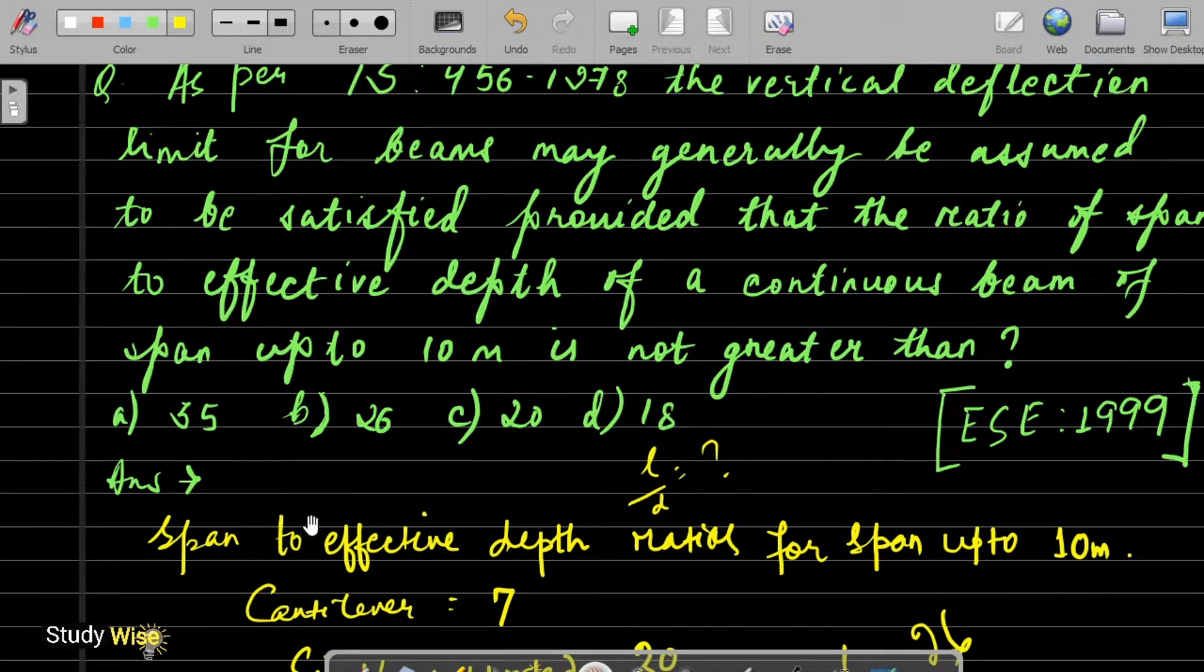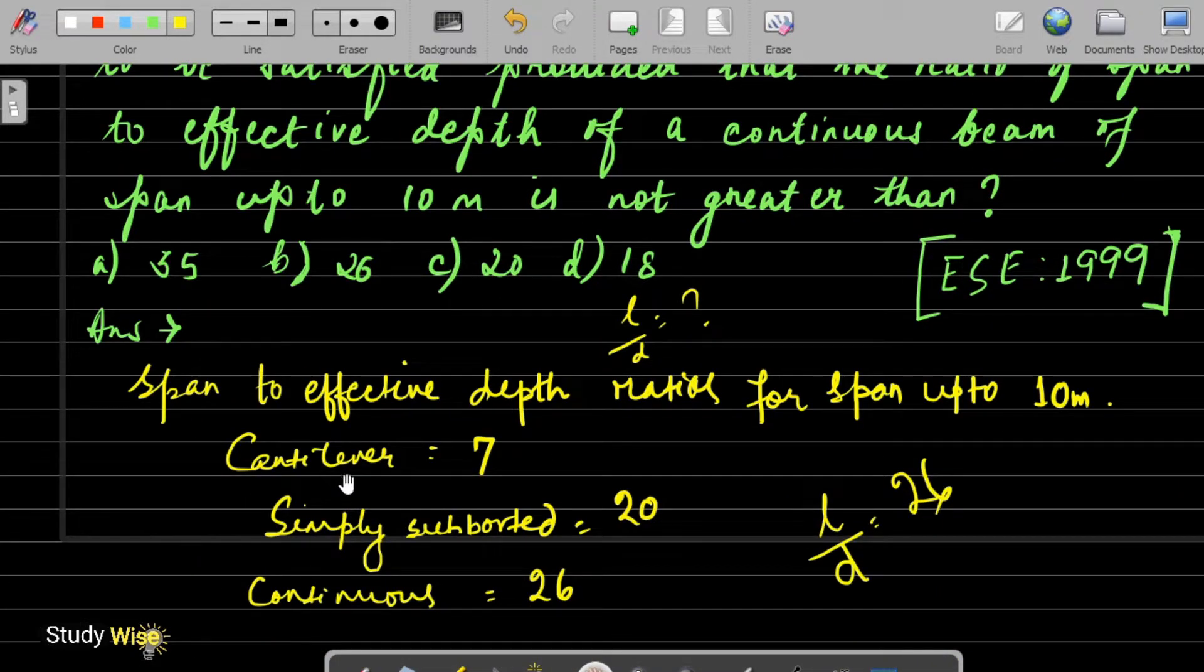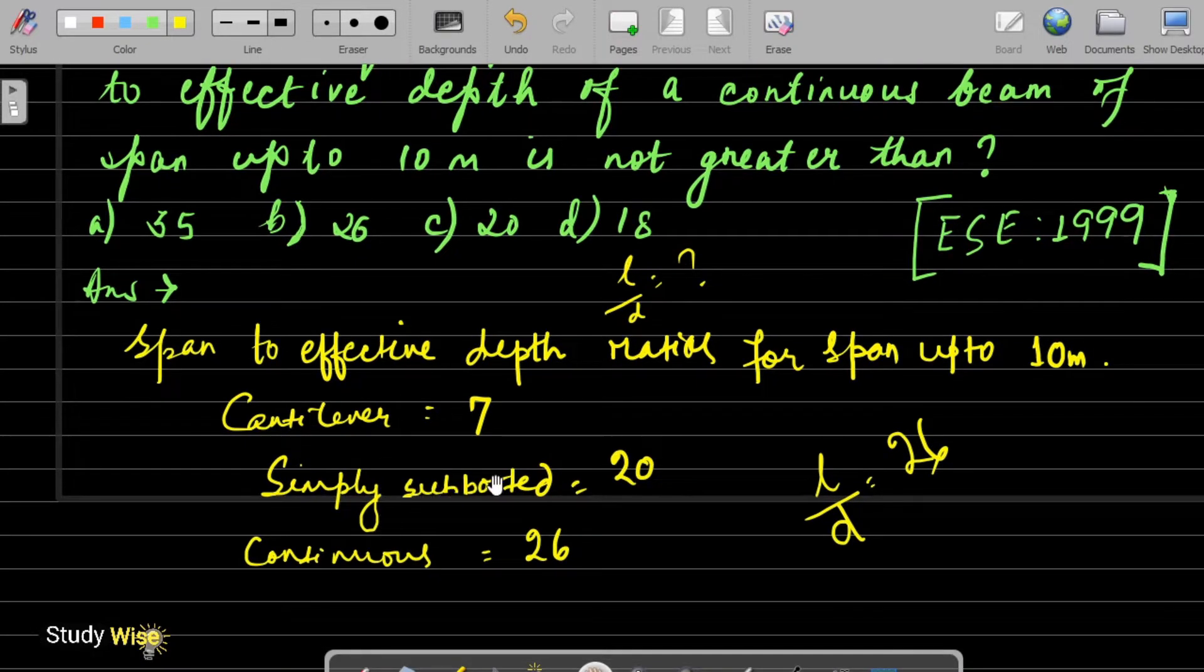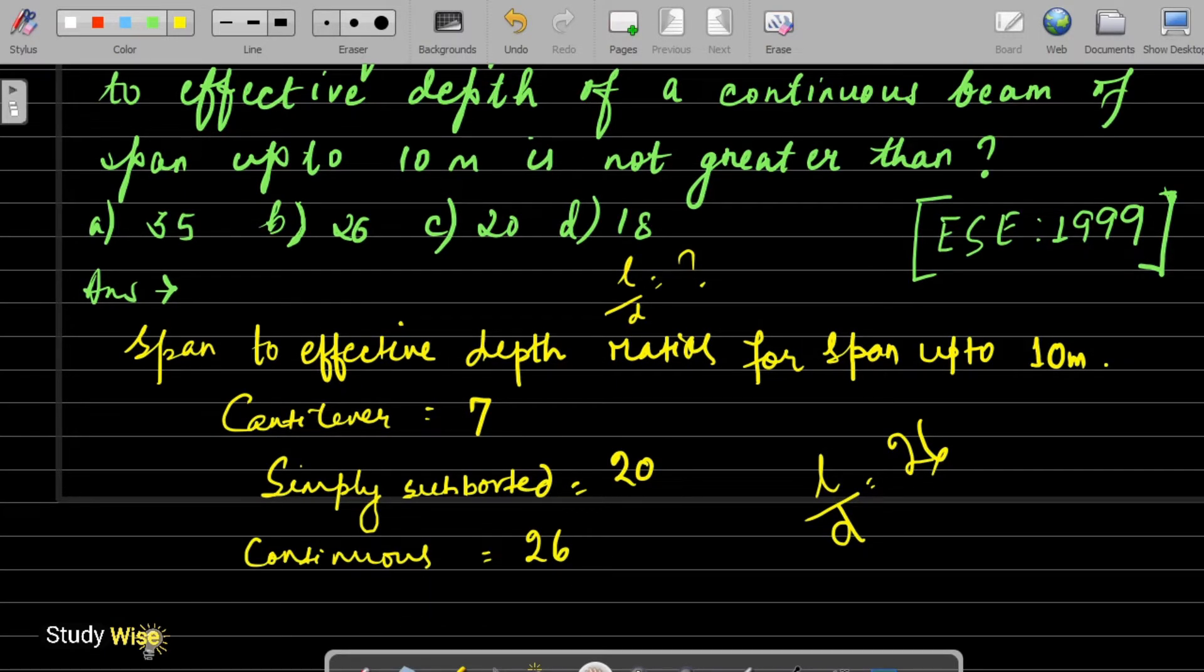The given values of span to effective depth, the ratio of span to effective depth for cantilever beam is 7, for simply supported is 20, for continuous is 26.